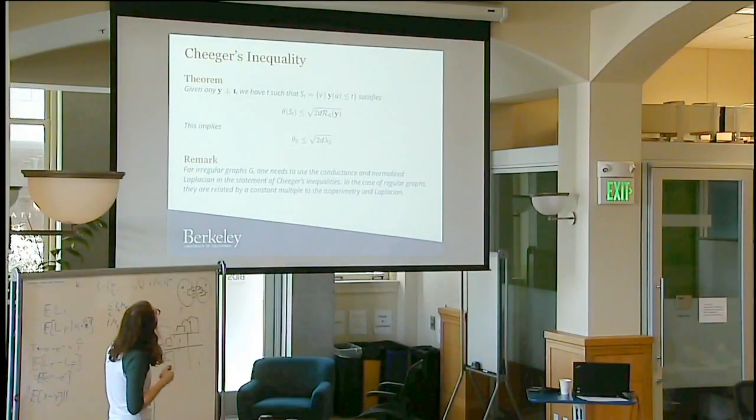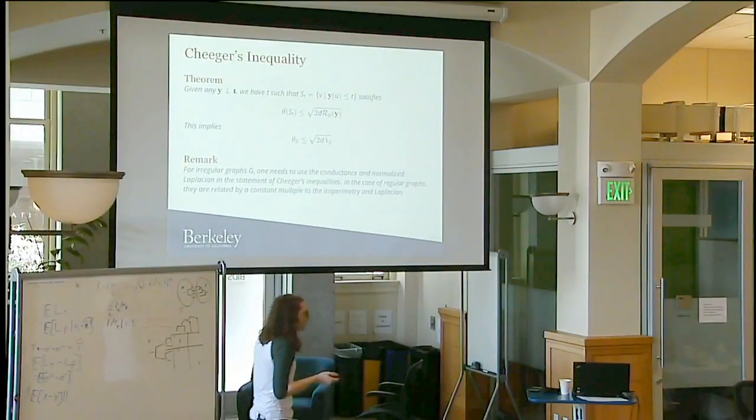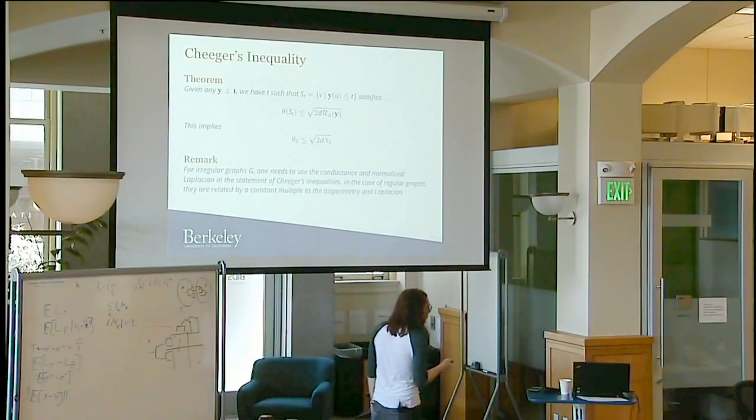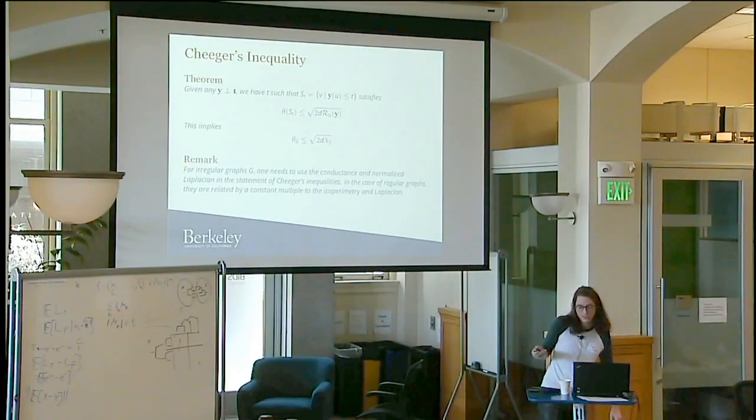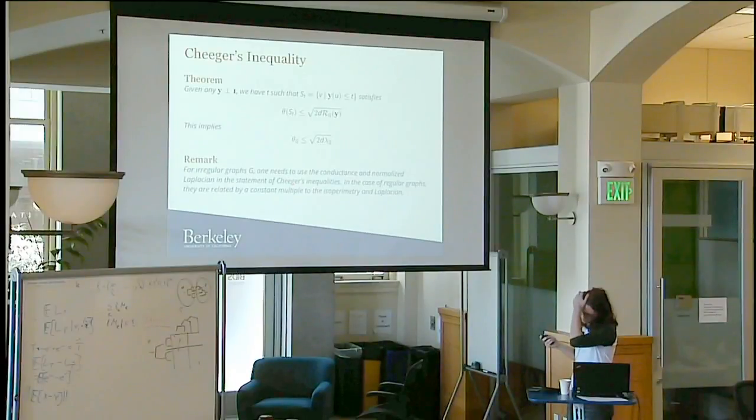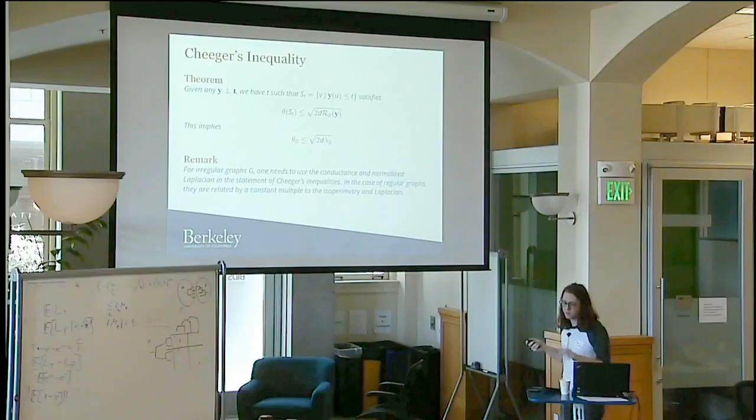There's a bunch of caveats here, things I've swept under the rug. For irregular graphs G, people don't look at the Laplacian and people don't look at the isoparametry. They look at a thing called conductance and a thing called the normalized Laplacian. This statement is usually stated in terms of those two. But when we're looking at regular graphs, those are just fixed multiples of the two quantities I've listed.